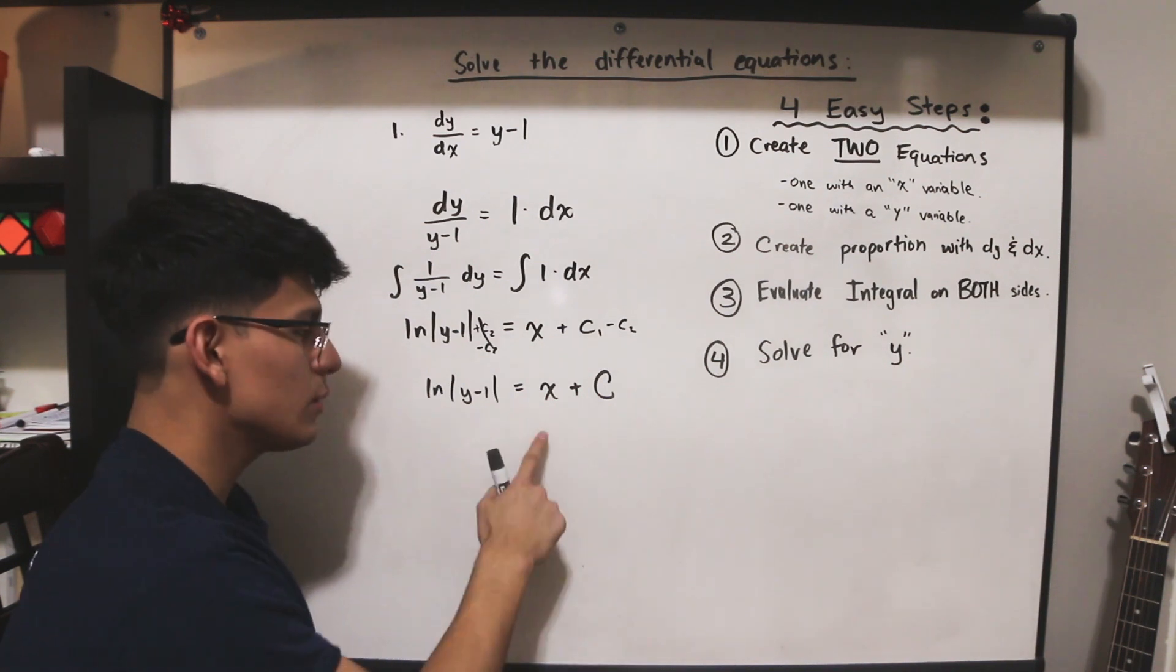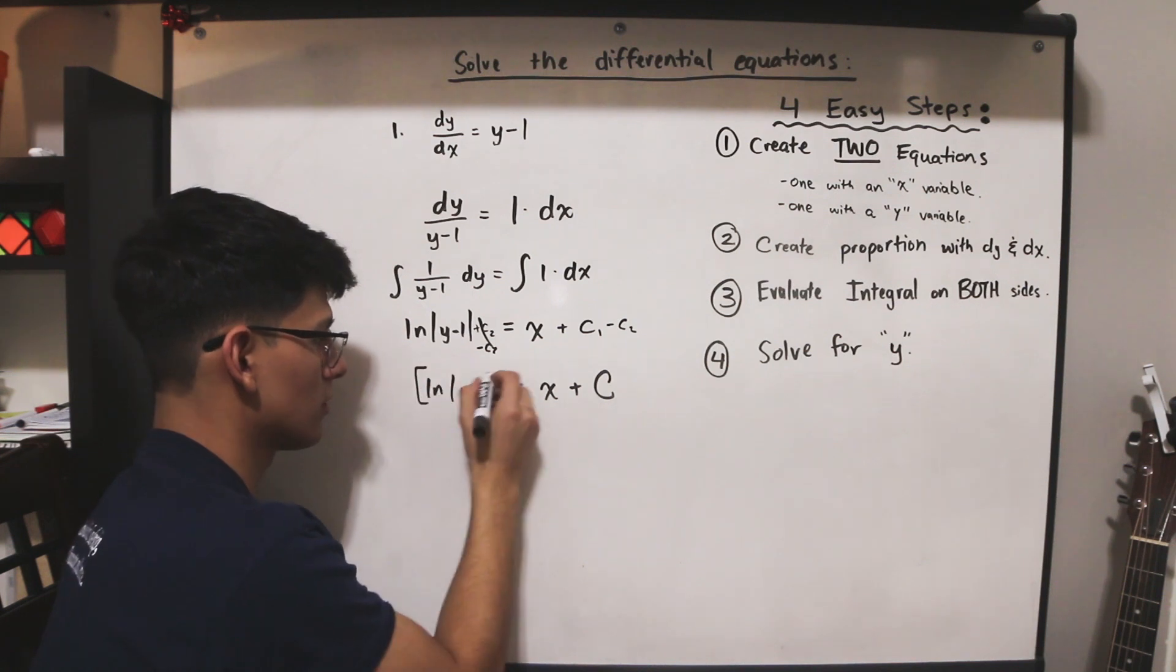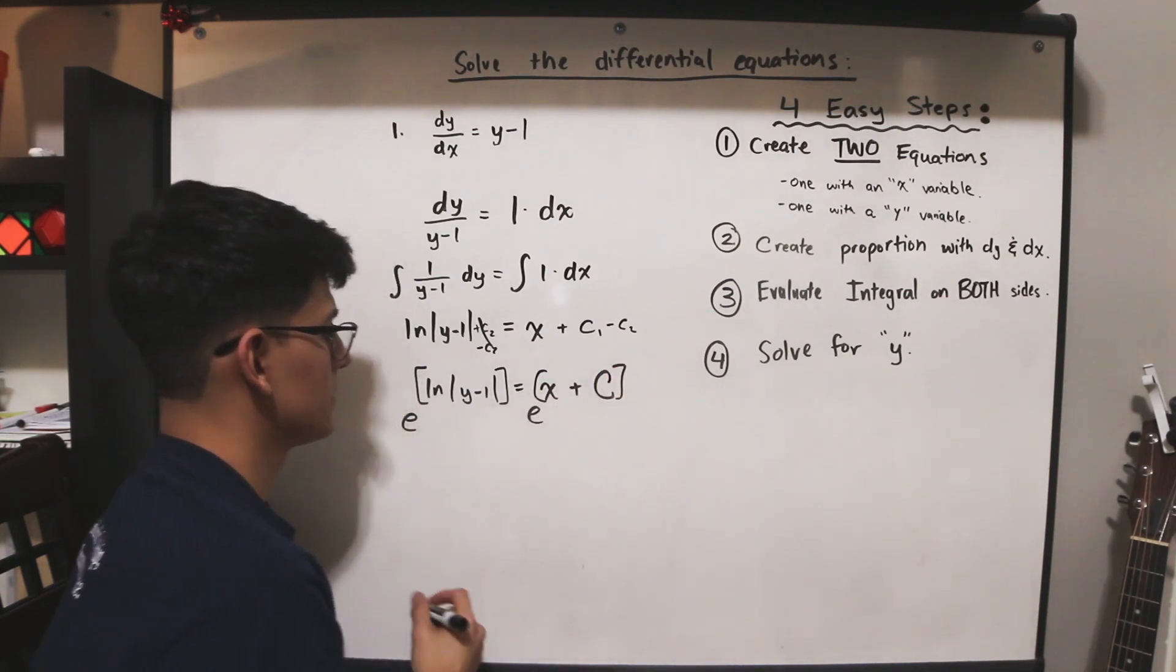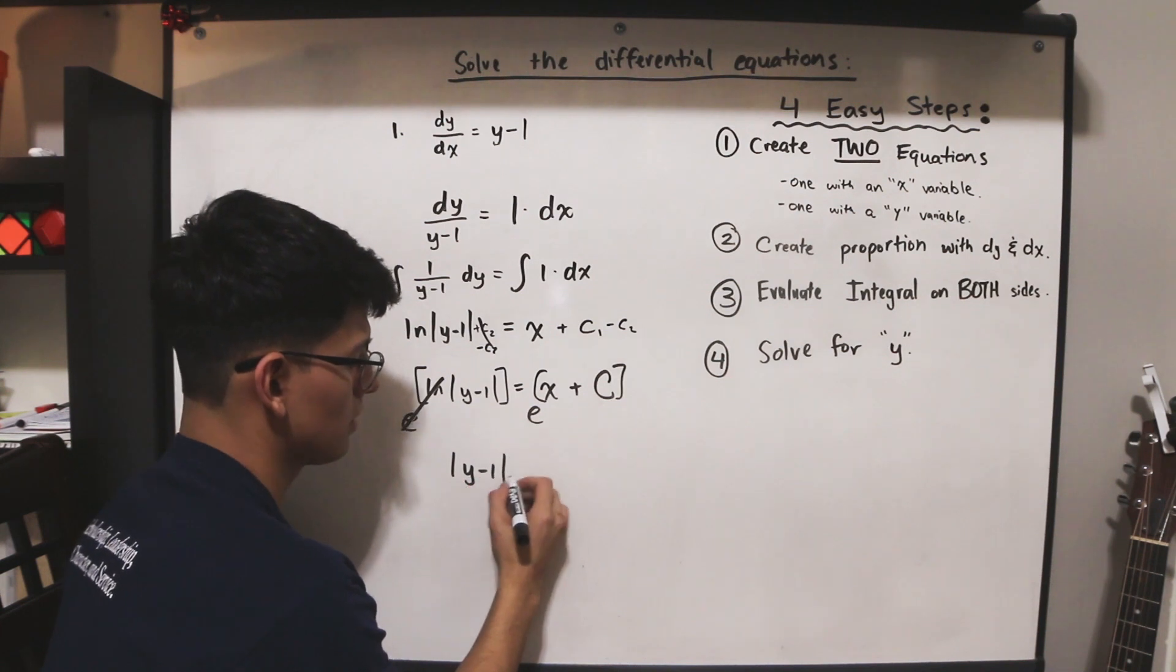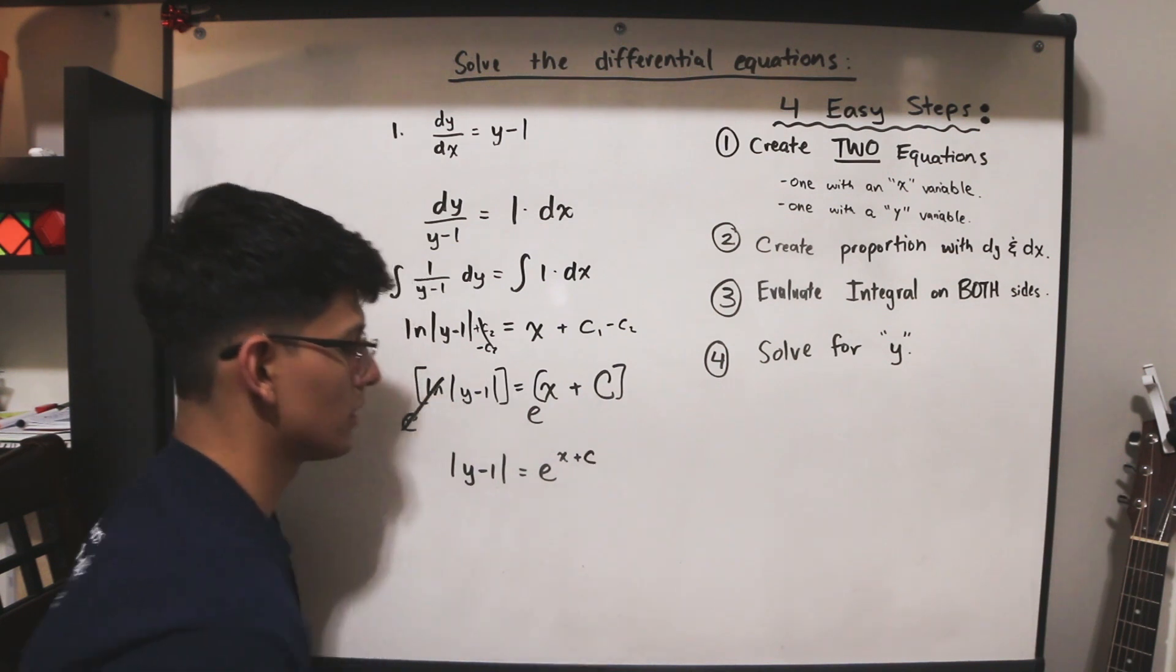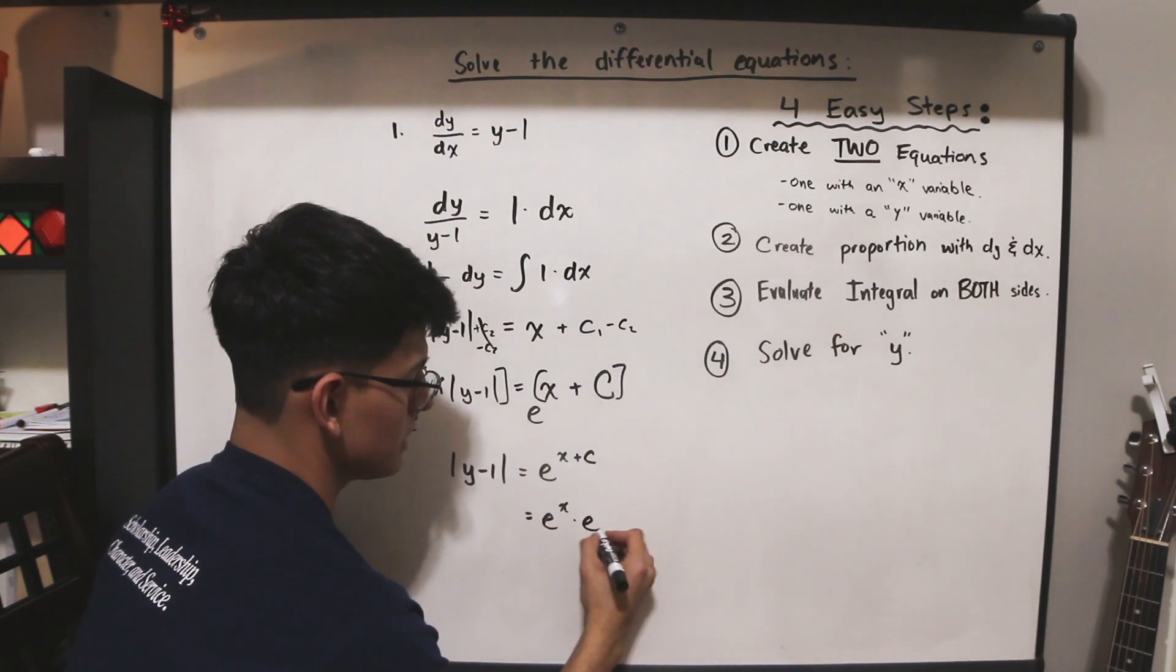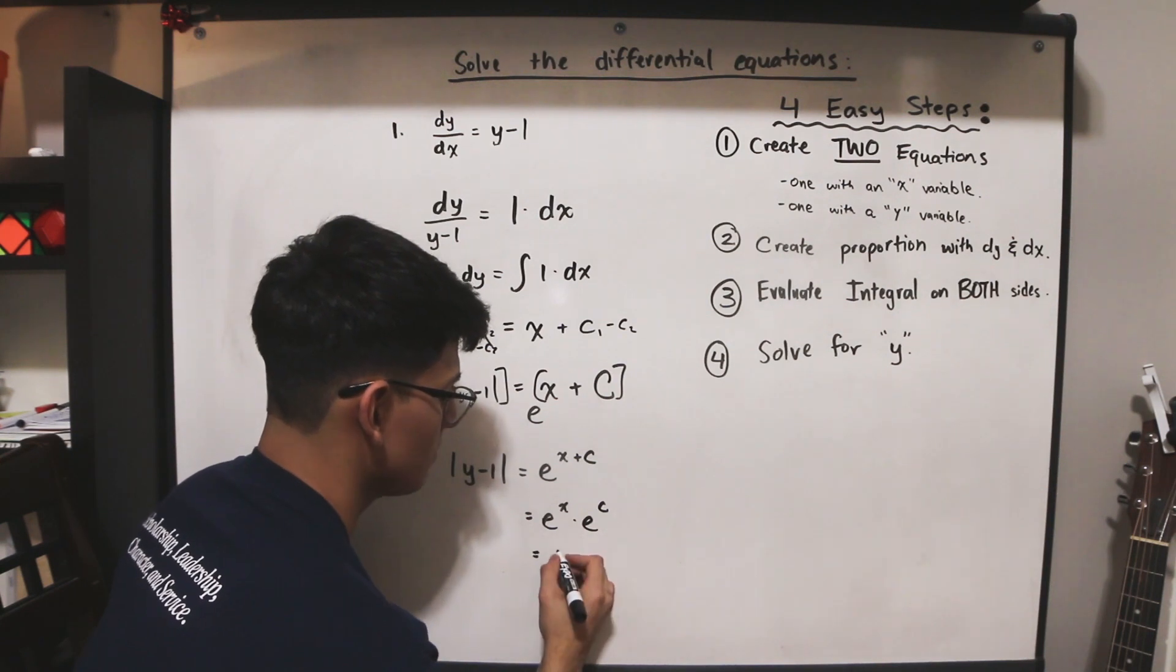We're going to continue solving for y. Well, how do we cancel ln? Well, we put this whole thing as a power of e, and the same thing here, to cancel out the ln's. And now we just have y minus 1 is equal to e to the x plus c. And we know that with our exponential rules, we can write this as e to the x times e to the c.